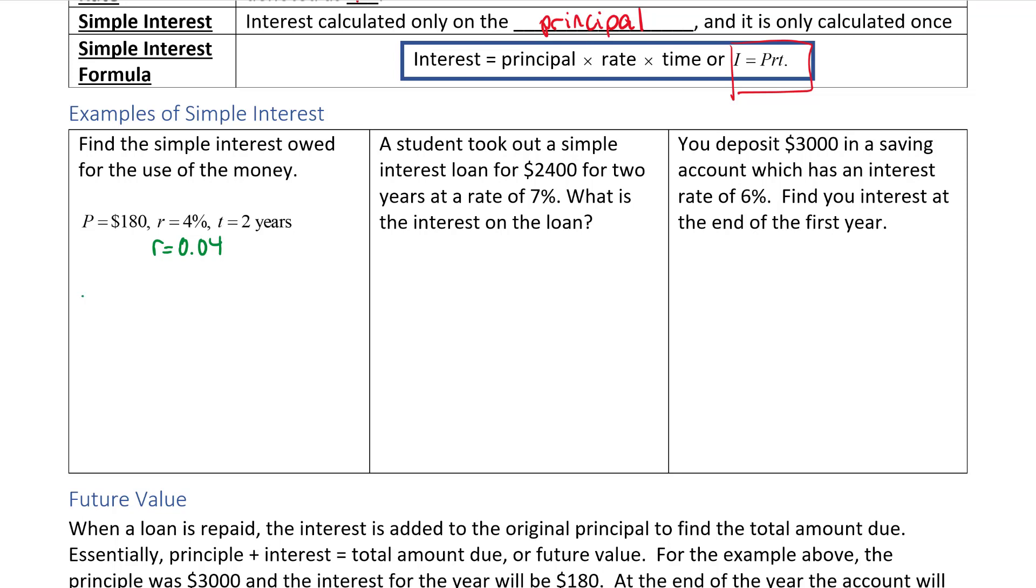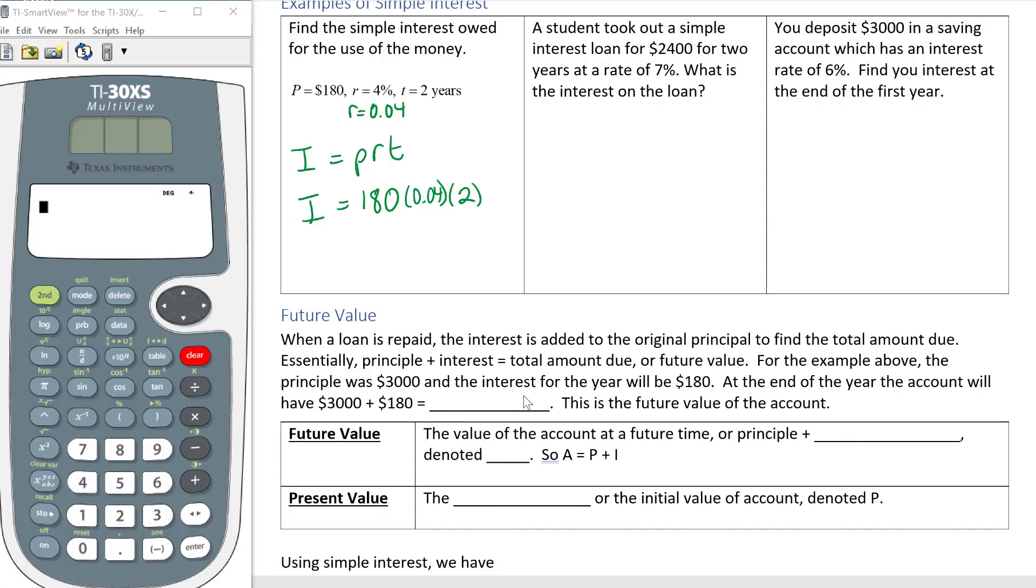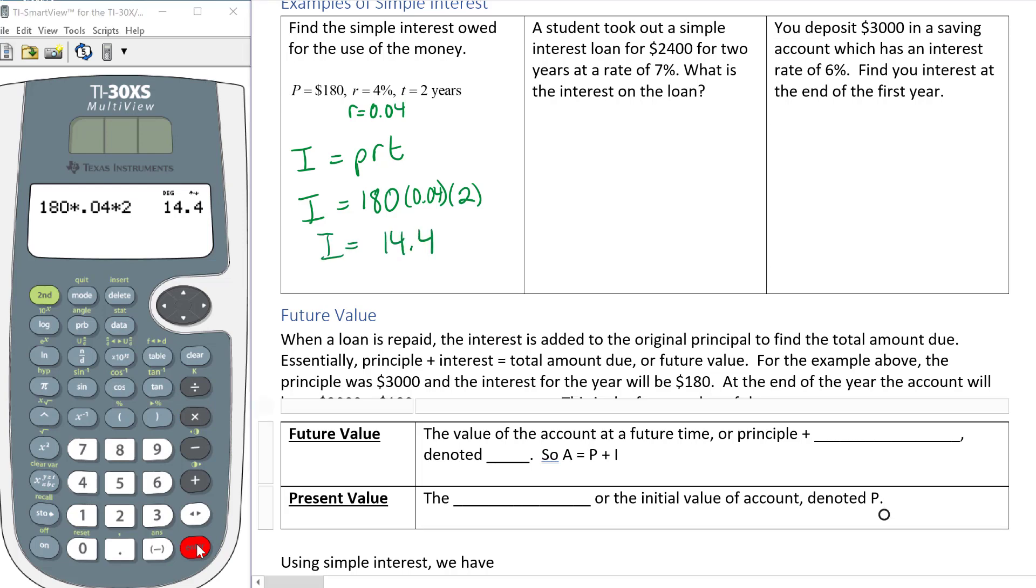When I'm trying to find the interest I use I equals PRT, the principal which is 180 times the rate which is 0.04 times the year which is 2. So now I've got my calculator, I'm going to take 180 times 0.04 times 2. That turns out to be 14.4, which means $14.40 of interest for the 2 years on the $180.